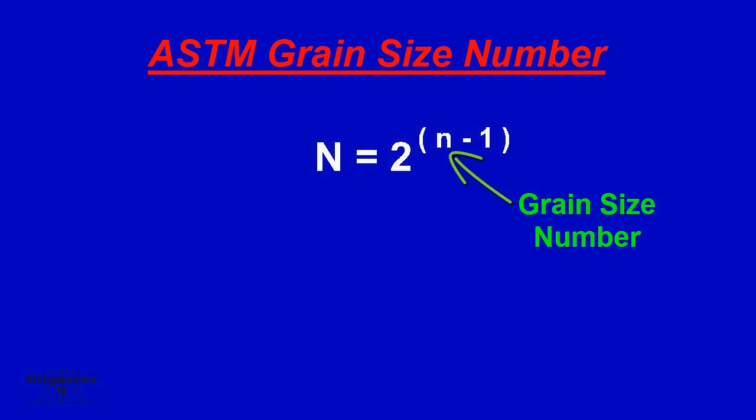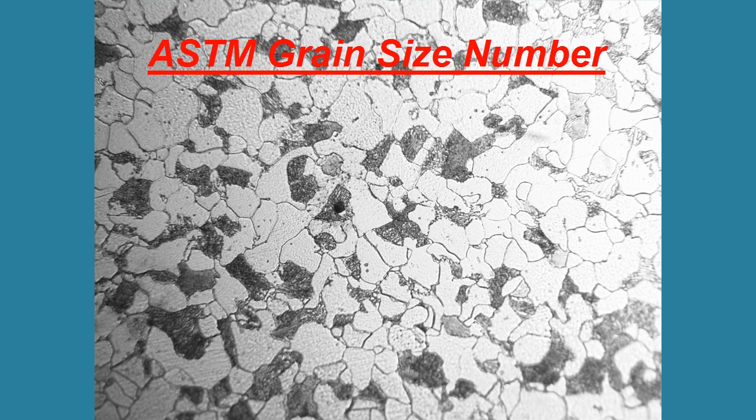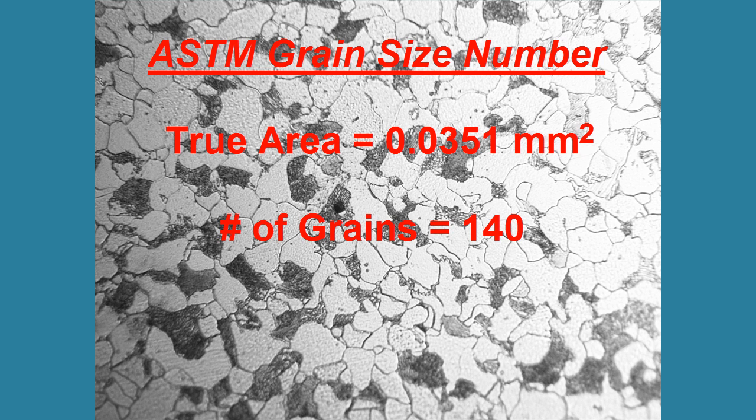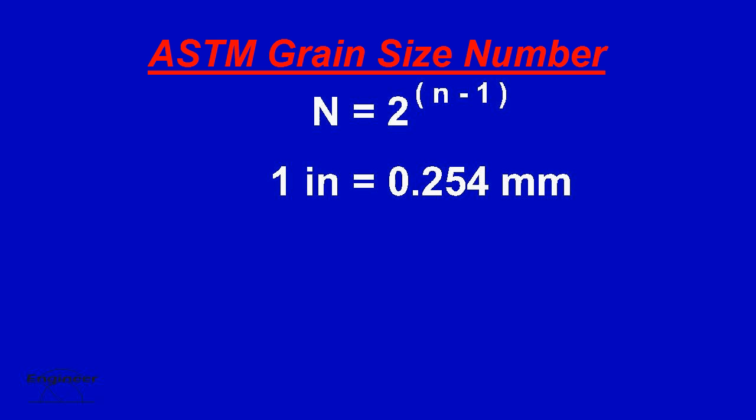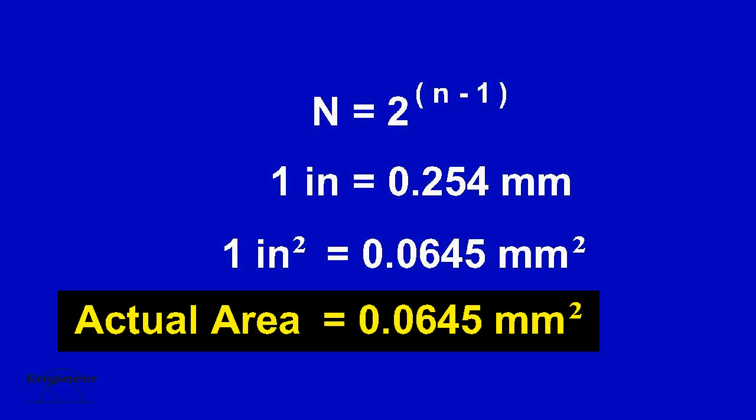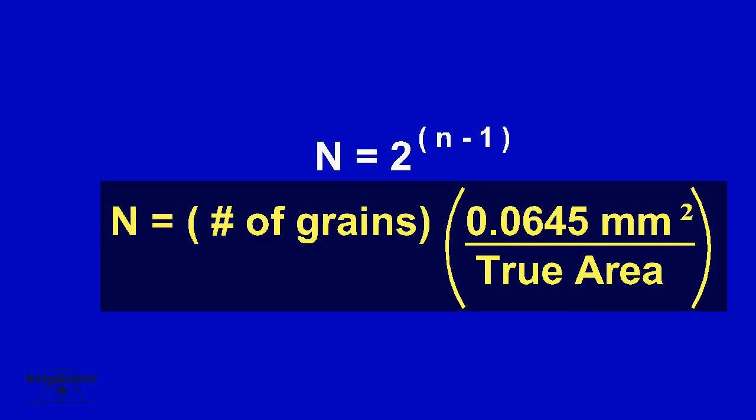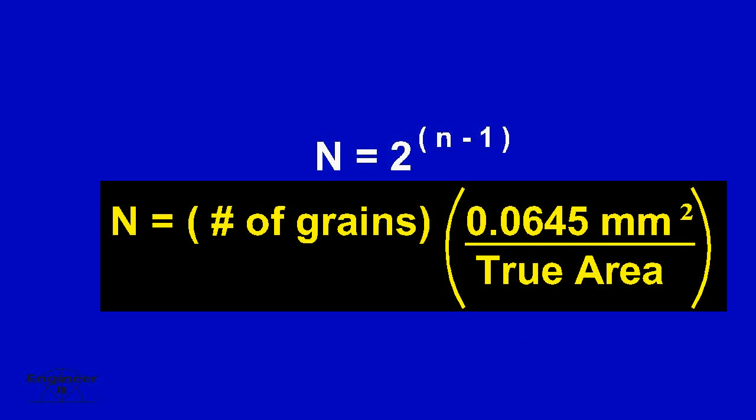ASTM relates the grain size number, little n, to the number of grains in one square inch area of a specimen photo at 100 magnification. This example uses a photo magnification of 768, so some conversions are required. We found that there are 140 grains in 0.0351 square millimeters. ASTM wants number of grains in one square inch area of a specimen photo at 100 magnification. So one inch on a 100 magnification photo is actually 0.254 millimeters on the specimen. And one square inch on a 100 magnification photo is actually 0.0645 square millimeters. Therefore, the actual area per ASTM is equal to 0.0645 square millimeters. We now have an equation with all the variables known and are able to solve for big N.